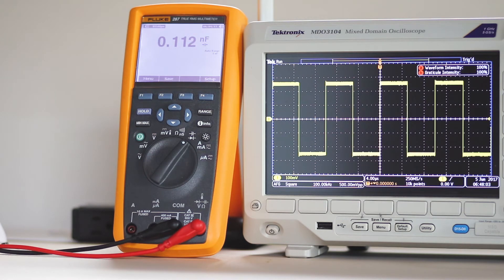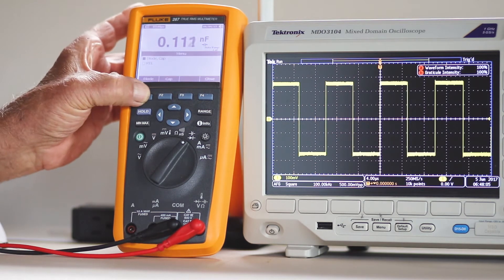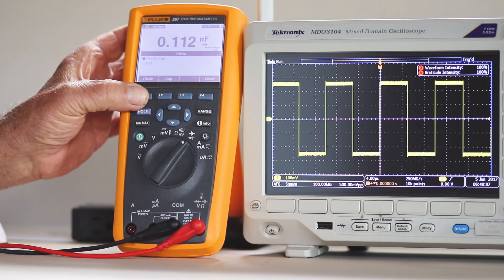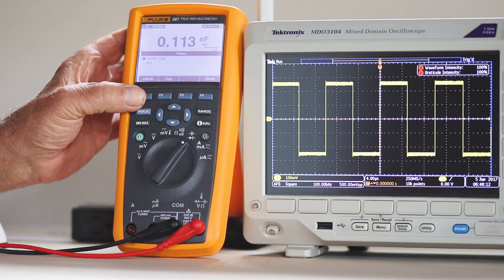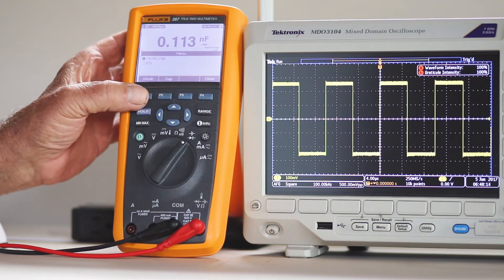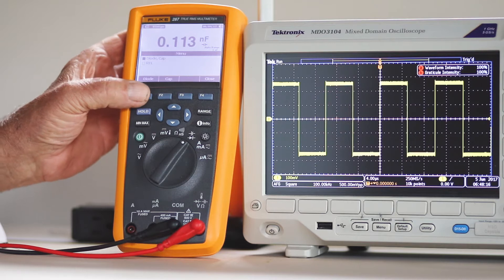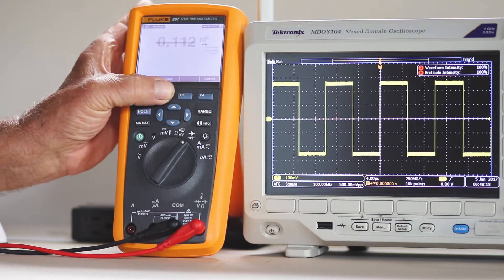press F1, which, as you can see in the display, is the menu. Use the up and down arrow to highlight diode capacitor. Then, press F2, corresponding to capacitance.